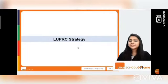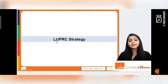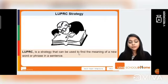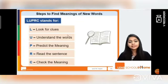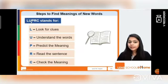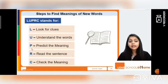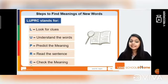To learn about this strategy, I'm going to take you through a presentation based on the LUPRC strategy. LUPRC is a strategy that can be used to find the meanings of new words or phrases in a sentence. It stands for: L - Look for clues, U - Understand the words, P - Predict the meaning, R - Read the sentence, and C - Check the meaning from the dictionary.